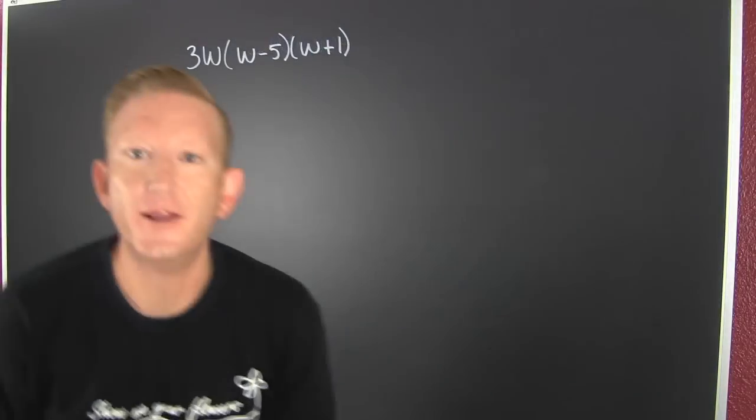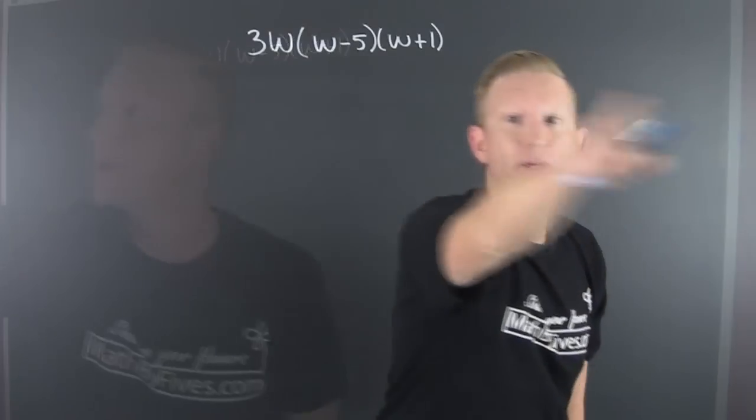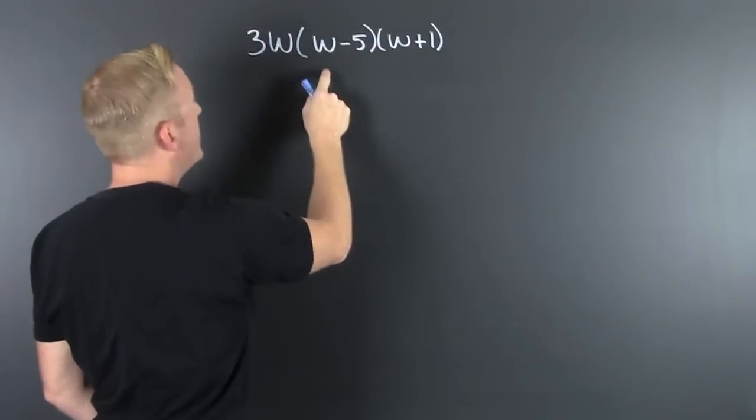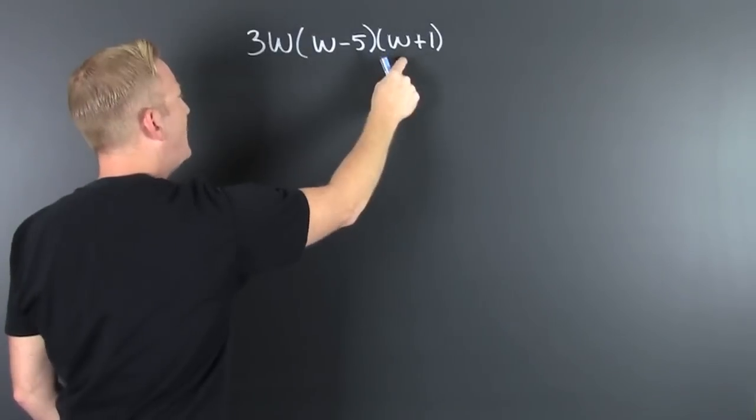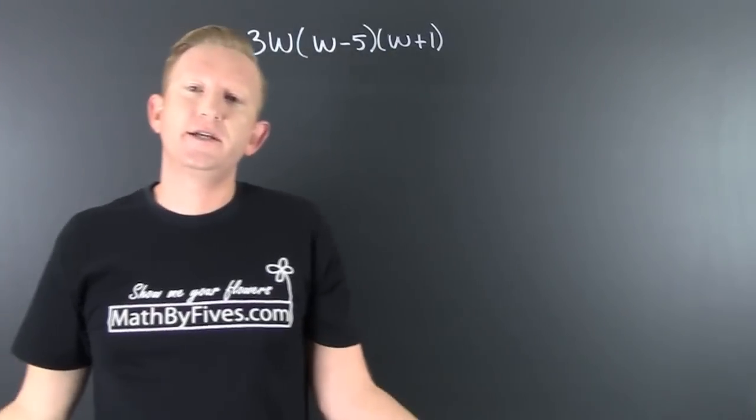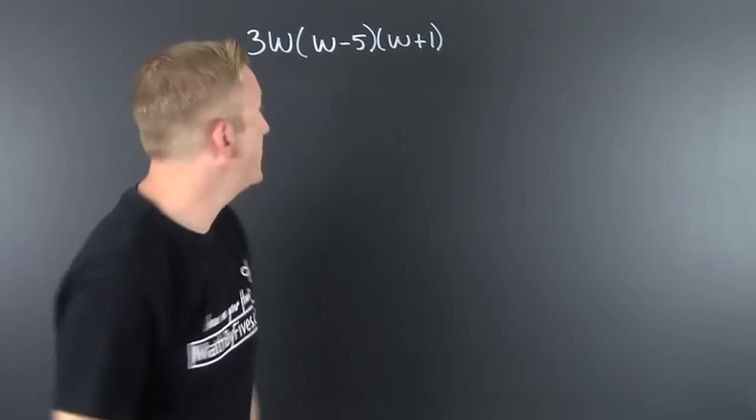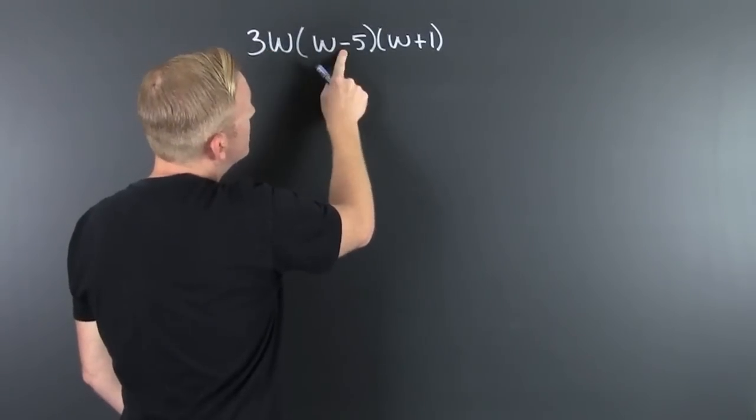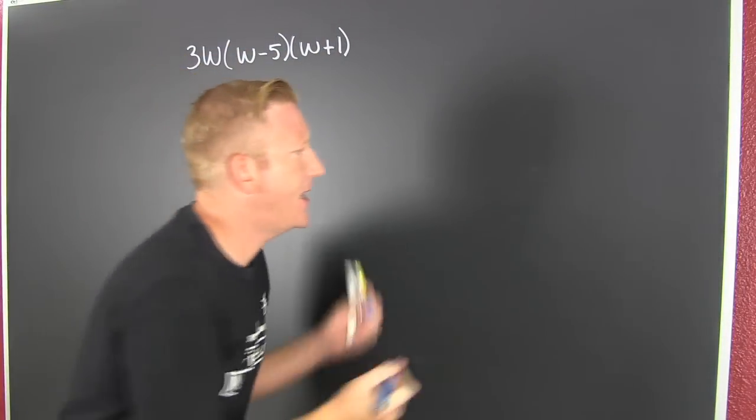Alright, what are we going to do? We're going to multiply these polynomials. I have a monomial times a binomial times a binomial. So what I suggest you do is multiply out the two with two terms first. Why? Because does three W multiply by this and that? It's a natural question, and to answer that...